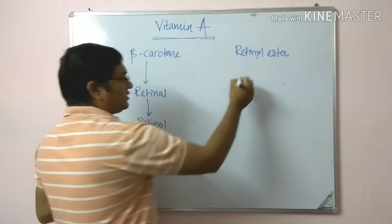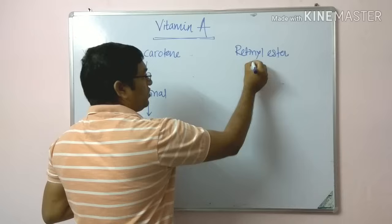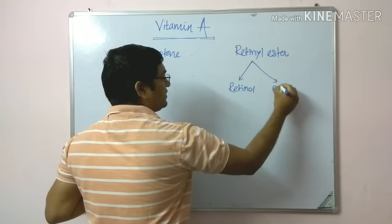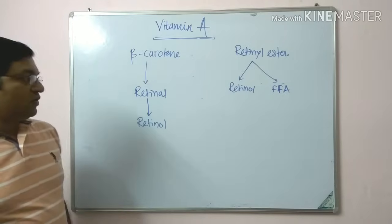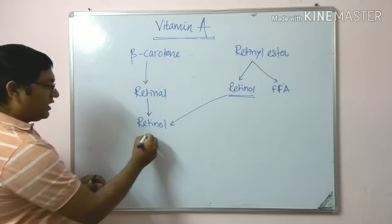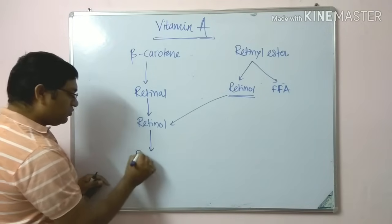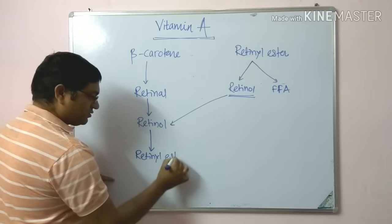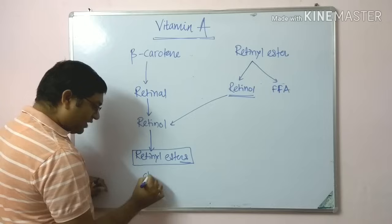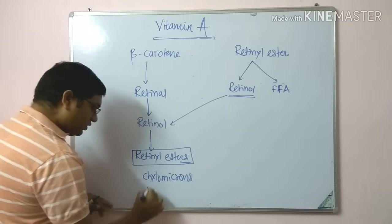This retinol is stored as retinyl esters. By intestinal brush border enzyme hydrolysis, it is hydrolyzed into retinol and free fatty acids. This retinol is re-esterified in the intestinal mucosal cell and converted into retinol esters. As and when required, it is incorporated into a chylomicron and carried through the lymph to the liver.